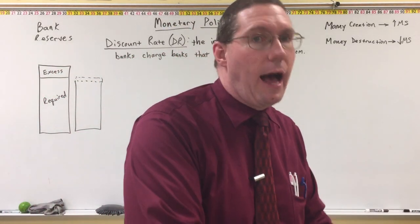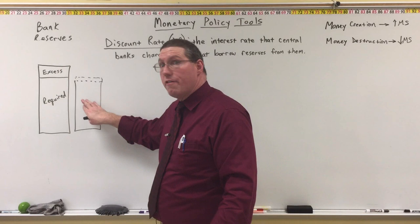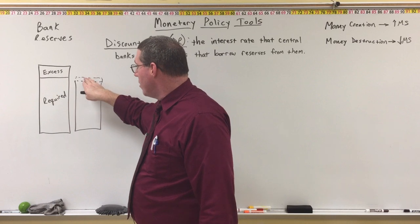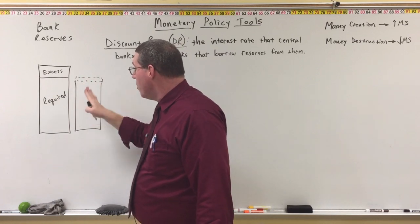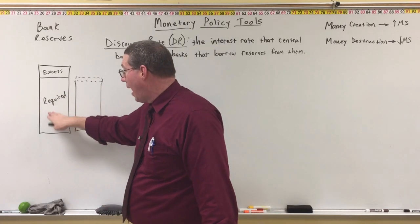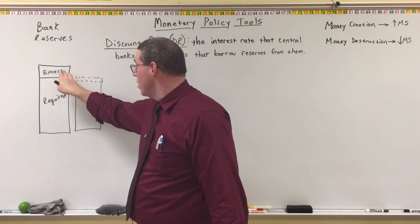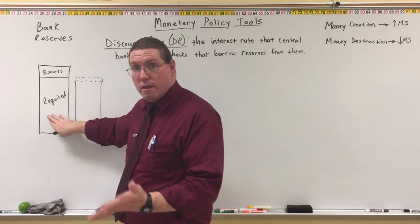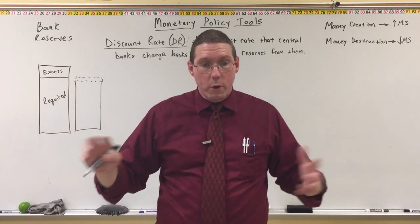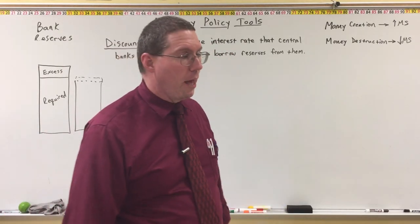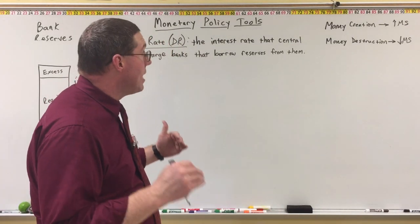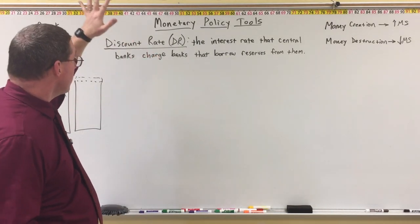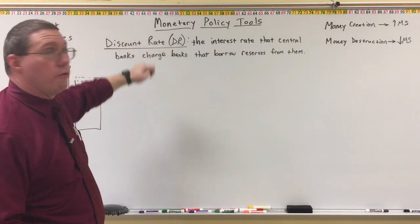Banks can also borrow money from each other. If one bank has excess reserves and another isn't covering their required reserves, that bank can borrow from the other bank's excess reserves to cover their reserve requirement, and they will have to pay interest to that other bank. There's all kinds of wheeling and dealing and borrowing and interest paying going on among banks — it's big business. But when a bank borrows money from the Fed, the interest rate they pay is called the discount rate.